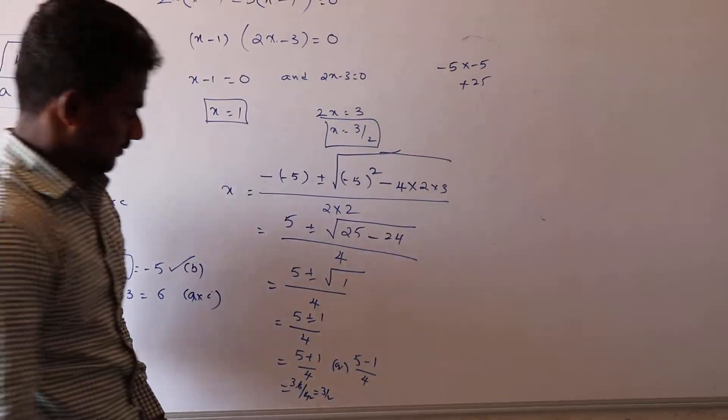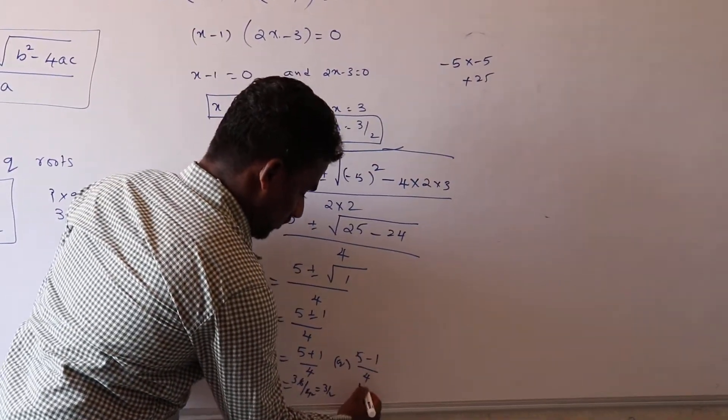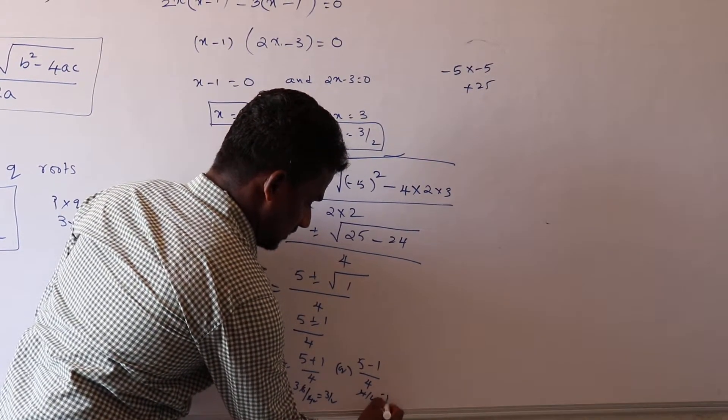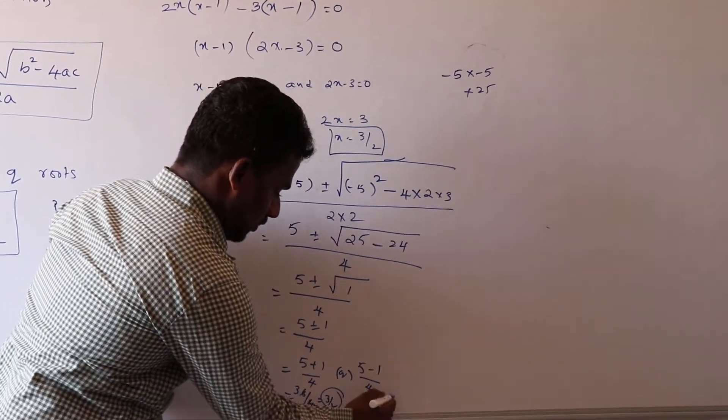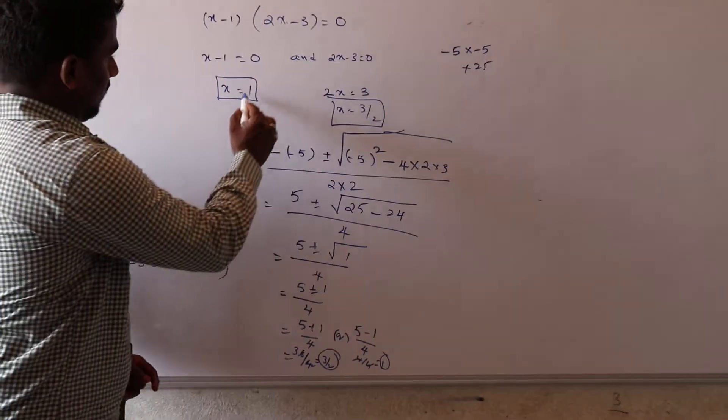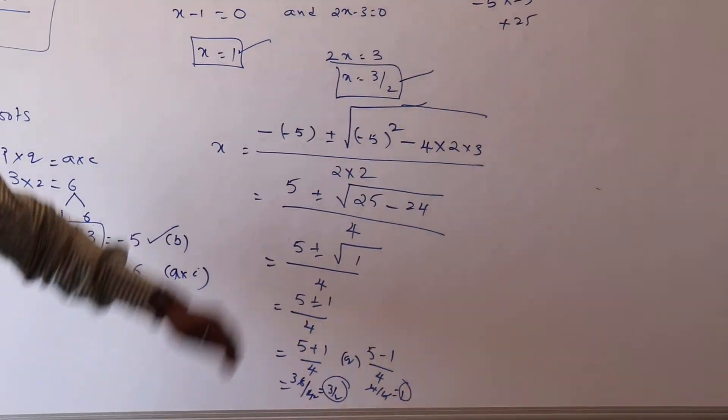That is 3 by 2 is one. The other one, let's see, 5 minus 1, 4, 4 by 4, 4 gets canceled, 1. So means 3 by 2, 1 are the same by the negative, 3 by 2, 1.